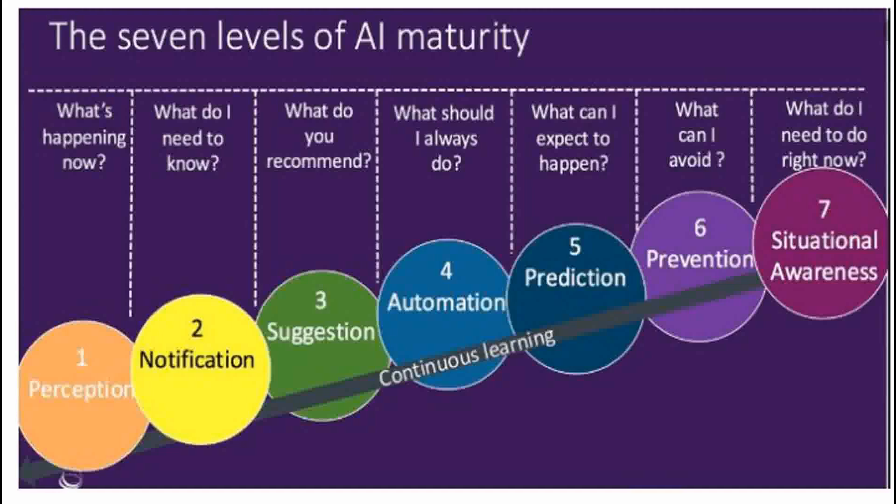The next is suggestion — the system suggests and recommends what to do and what not to do. From that perception and understanding, the system recommends for us. After suggestion, the next stage is automation — how to meet more goals and what should always be done. Then there is prediction — predicting the environment and understanding it based on previous data.